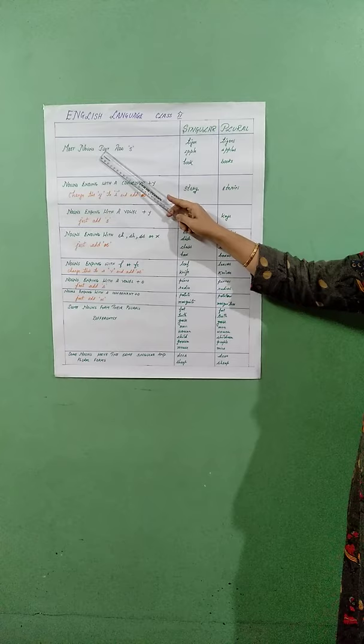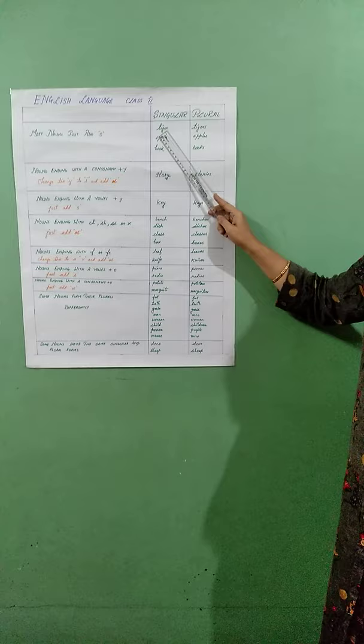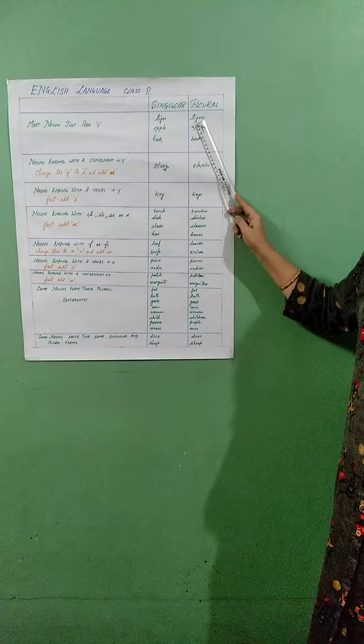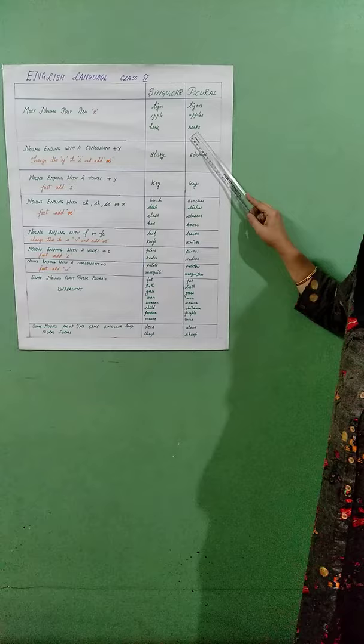The very first rule: most nouns can be changed into their plural forms by just adding an S to it. For example, the word tiger is a noun — a common noun. It can be converted into a plural form by just adding S, so it becomes tigers. Then we have apple, which similarly goes to apples. Then we have book, which can be changed into books. These are the plural forms of these words.